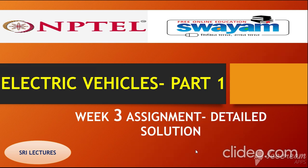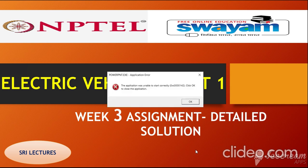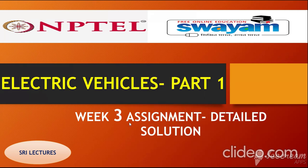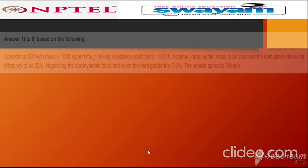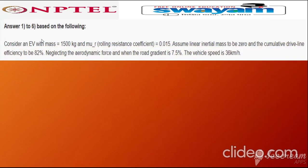Hi all. In this video I will provide a detailed solution for Week 3 Electric Vehicle Part 1, Week 3 assignment, questions number one to six, based on the following data. Consider an EV with a mass of 1500 kg.